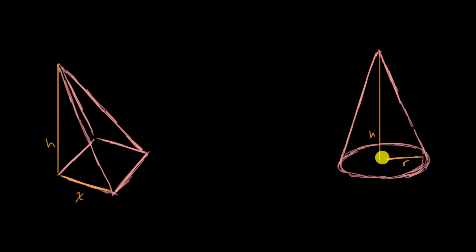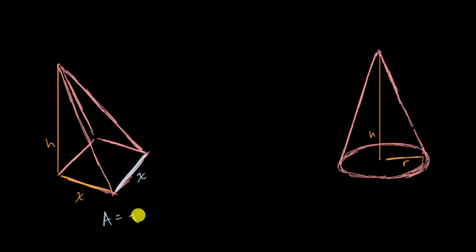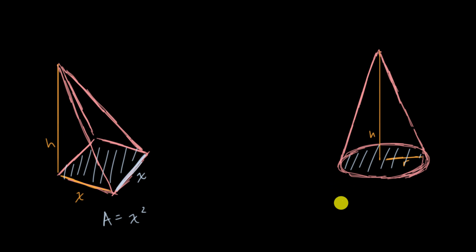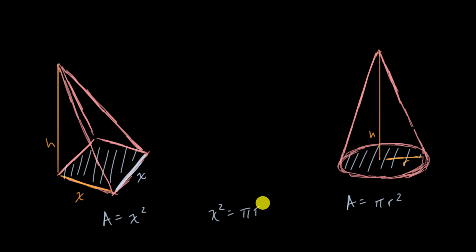We also know that the area of the bases is the same. For the left pyramid, let's assume it is a square, so the area of the base is X times X, which equals X squared. And the area of the cone's base is equal to π times R squared. I'm saying that these two things are the same, so X squared equals πR squared.